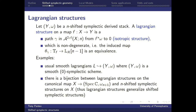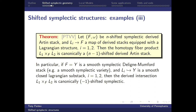The other construction of shifted symplectic structures comes from intersecting Lagrangians. If you have an n-shifted symplectic derived Artin stack and two Lagrangians in it — two stacks mapping to it with Lagrangian structures — then the homotopy fiber product, the intersection of those two, carries a natural (n−1)-shifted symplectic structure. In particular, if you take a zero-shifted symplectic scheme and two Lagrangians in it, the derived intersection will have a canonical (−1)-shifted symplectic structure.